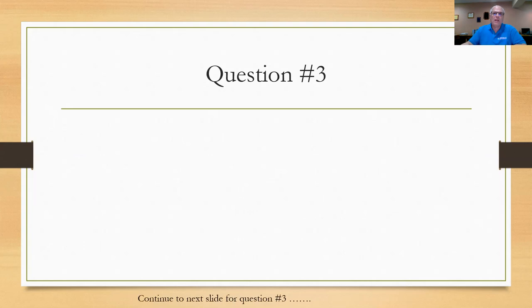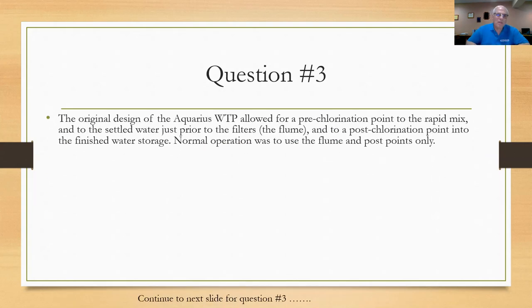All right, let's move on to question number three. Now three is a long drawn out history lesson about the plant that I want to record for the plant operators here. It's not necessary to know all of this to do the problem, but I'm trying to memorialize some information for the operators at the plant. The original design of the Aquarius water treatment plant allowed for pre-chlorination point to the rapid mix, that was one point. Allowed pre-chlorination to the settled water just prior to the filters in an area that they call the flume. And to a post-chlorination point into the finished water storage. So they had three places that they could chlorinate: two of them were pre-filter and the other one was after filtration. Normal operation was to use the flume and the post points only.